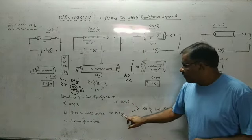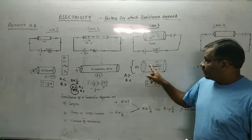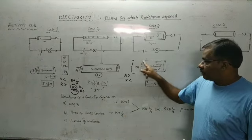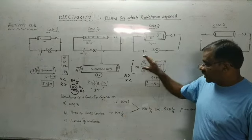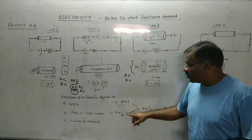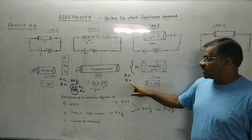If the area of the wire is more — that is, the thickness of the wire is more — the resistance offered is always less, meaning more current can flow.